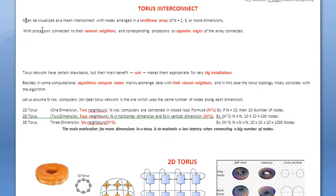The definition is: it can be visualized as a mesh interconnect with nodes arranged in a rectilinear array of n = 2, 3, or more dimensions, with processes connected to the nearest neighbor and corresponding processes in the opposite edge of the array connected.